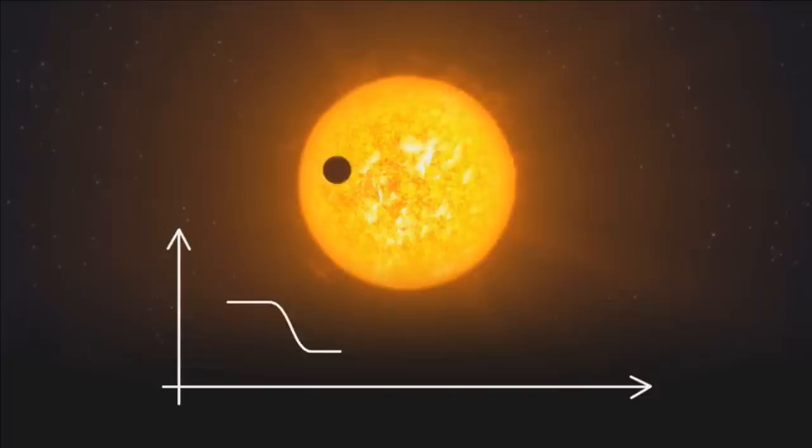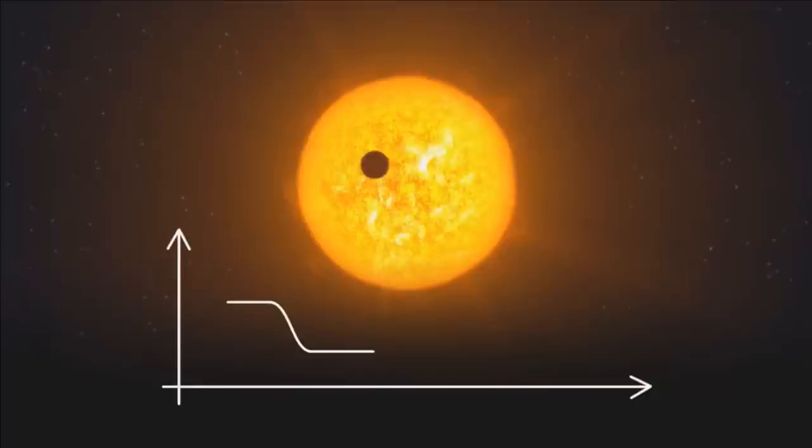I've already mentioned the Kepler Space Telescope. If we take a look at the method that Kepler uses, shown in this video from the European Southern Observatory, effectively what Kepler does is stare at a planet passing in front of a star. As the planet transits in front of the star, some of the light is blocked, and we can measure this dip, which we call the transit depth.